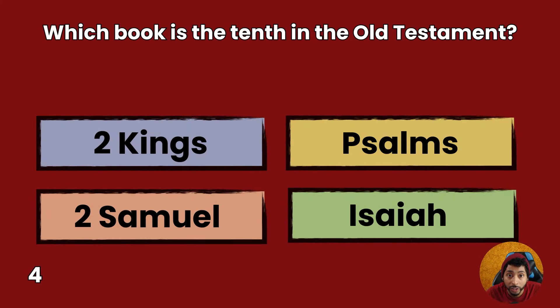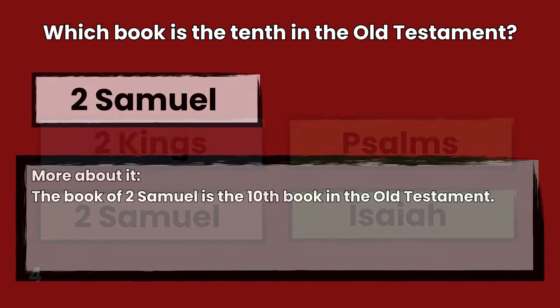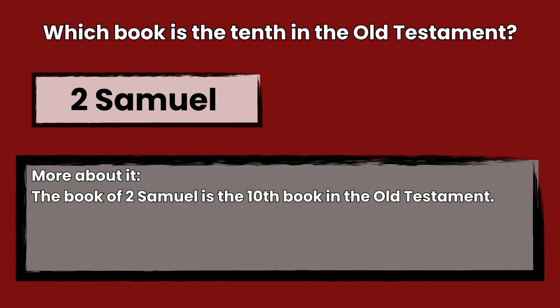Question 4: Which book is the tenth in the Old Testament? 2 Kings, Psalms, 2 Samuel, or Isaiah? Answer: 2 Samuel. The book of 2 Samuel is the tenth book in the Old Testament.